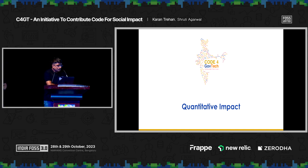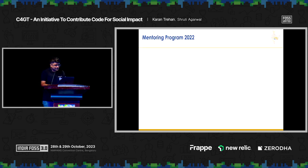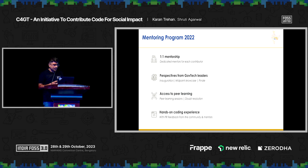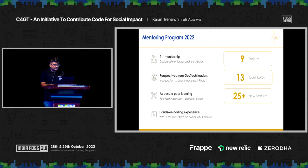Thank you, Shruti. As Shruti mentioned, we ran the dedicated community program for two years — 2022 and 2023. In 2022, we ensured one-to-one mentorship between contributors and mentors, brought in GovTech ecosystem leaders through an inauguration program, a midpoint showcase, and a finale, and provided peer learning sessions and doubt resolution. We contributed to nine projects, had 13 contributors, delivered 25-plus new features to open source DPGs, and had 100% of the contributed code merged into the original products.